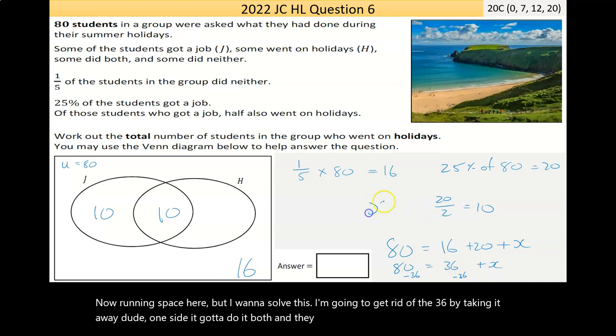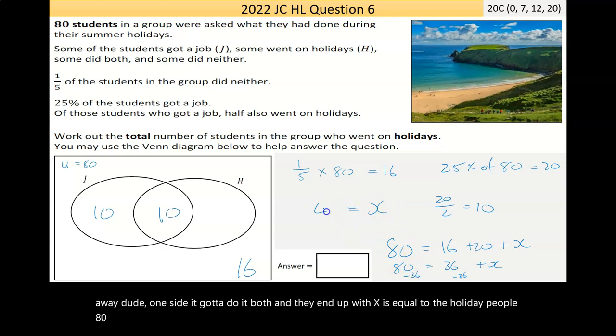And I end up with X is equal to, or the holiday people, 80 take away 36 should be 44.